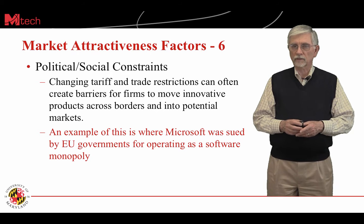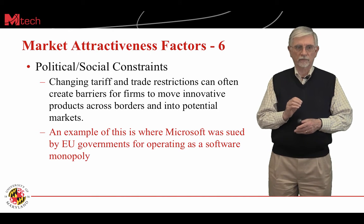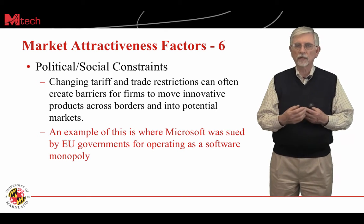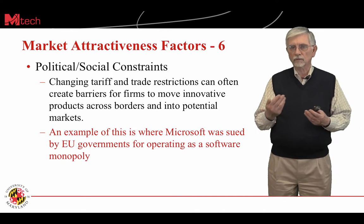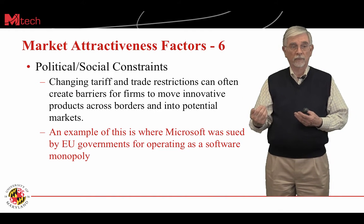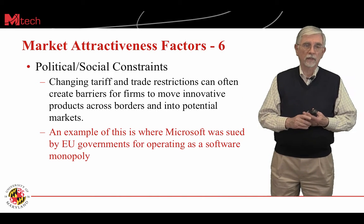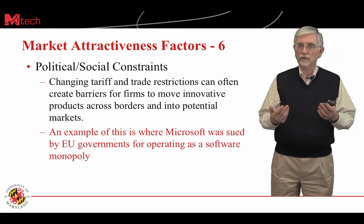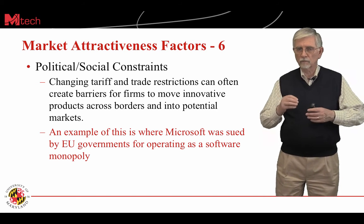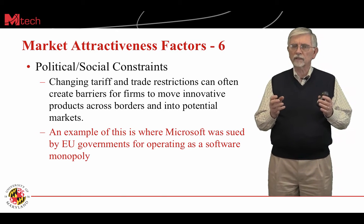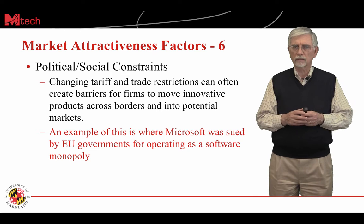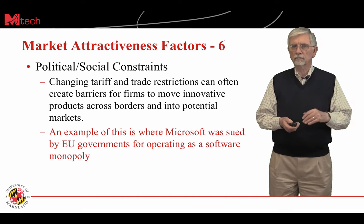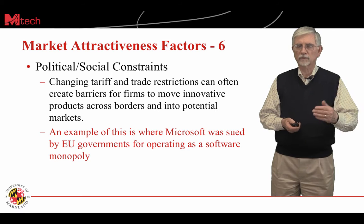Another market attractiveness factor is political and social constraints — external factors such as trade or tariff restrictions that create barriers for firms moving innovative products across borders into new markets. One example is where Microsoft was actually sued by the European Union for operating as a software monopoly. Even with an innovative idea, if you're operating in a political or social environment that's not receptive, you're really in trouble.